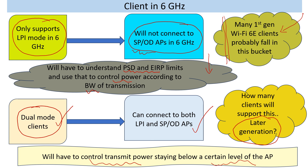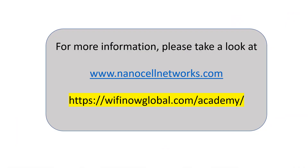So in the future, don't expect that all 6 GHz capable clients will connect to your AFC-enabled AP, because some of these first-gen clients might not connect to your AFC-controlled AP. That's something to keep in mind if you are implementing it for an enterprise or similar applications where you estimated that all 6 GHz clients will favor that band. Thank you for listening. For more information, please take a look at our website. We also offer courses through Wi-Fi Now Academy. Thank you.